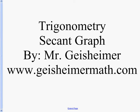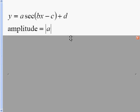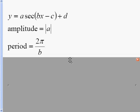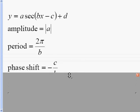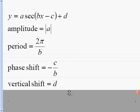The secant graph: y equals a secant of bx minus c, plus d on the outside. Very similar to the cosine graph because you must recall that the secant is the reciprocal of cosine. Our amplitude is the absolute value of a. Our period is 2π over b. Our phase shift is negative c over b, and our vertical shift is d.